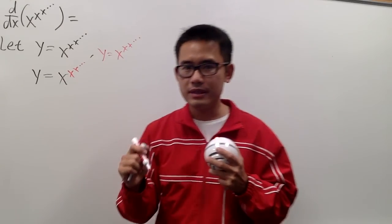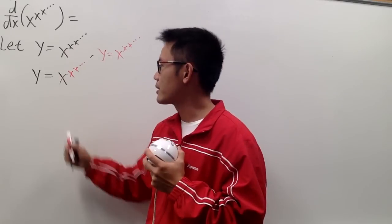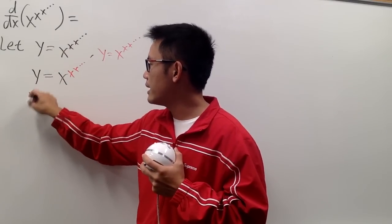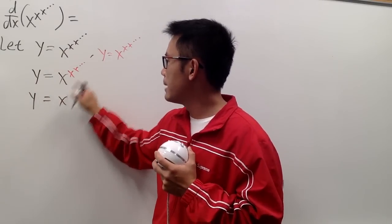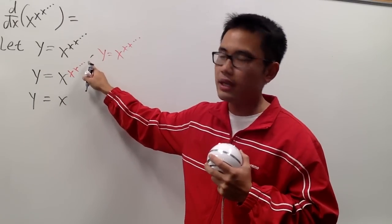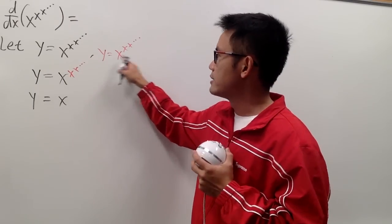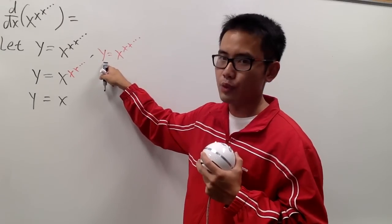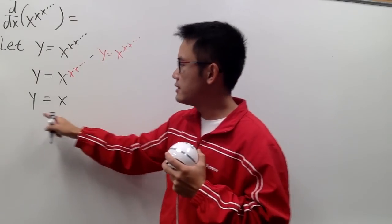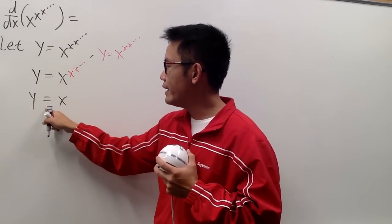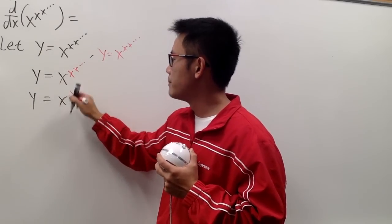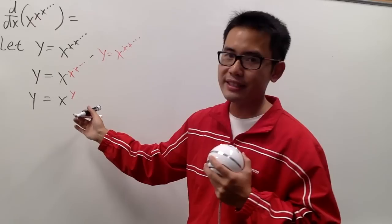Now take a closer look. This is y equal to x, but all the part in red is the same as just y in red, right? So in other words, this is just y equal to x to the y power.